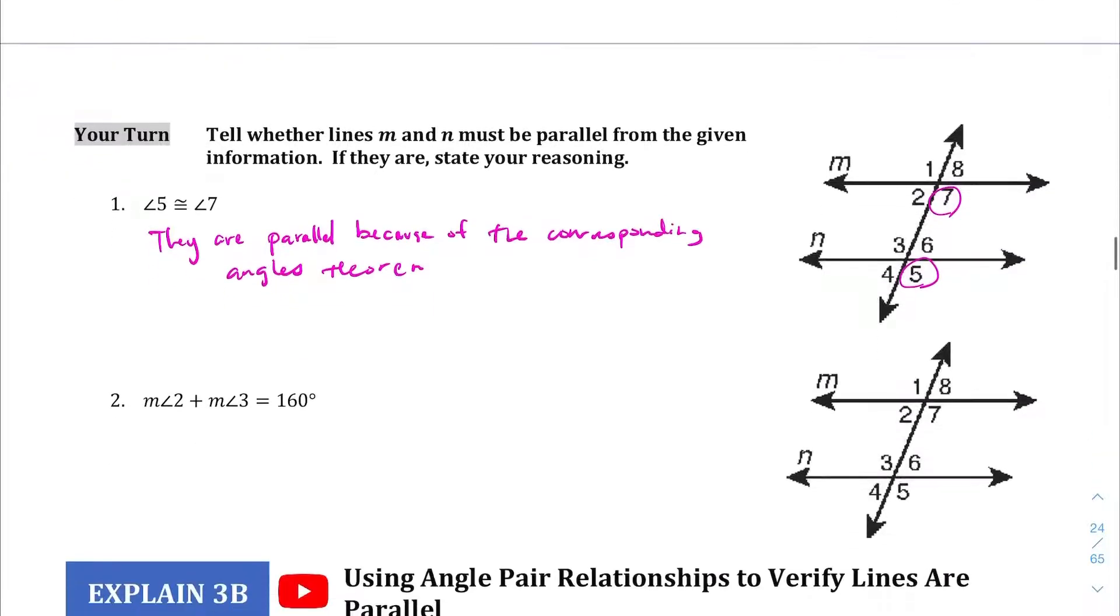And Your Turn, question number two. The measure angle two and three equals 160. Now, the same side interior angles are supplementary, which means they equal 180. This one does not, so these are not parallel.